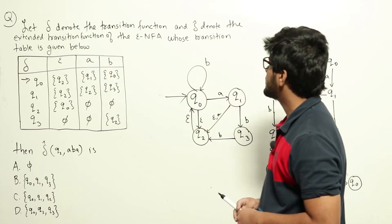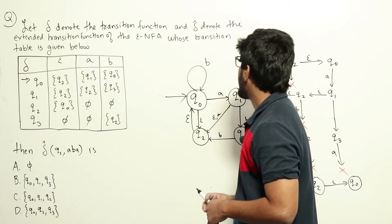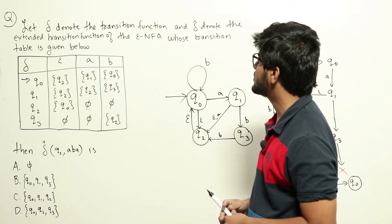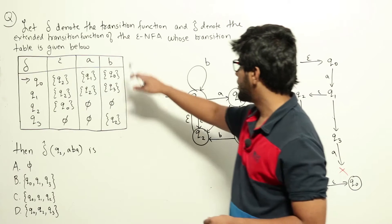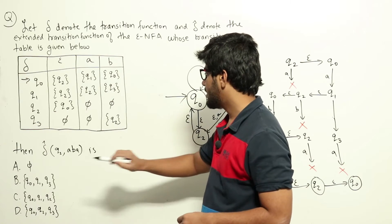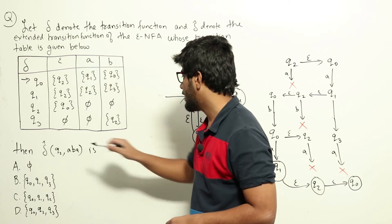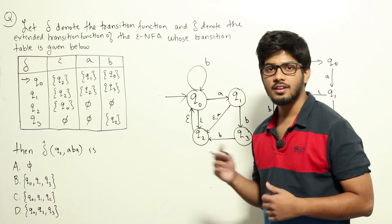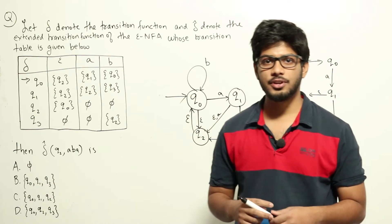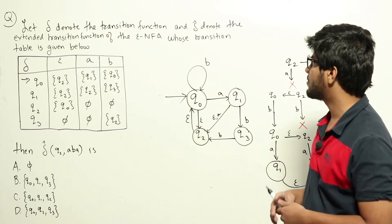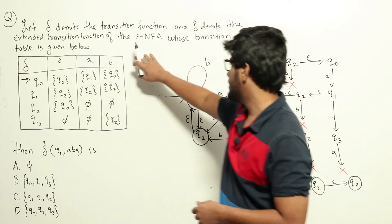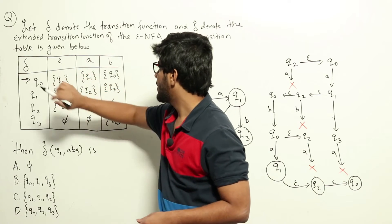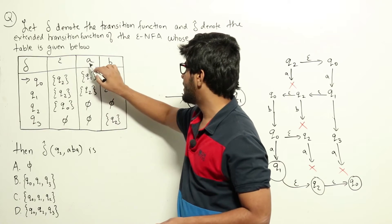Let delta denote the transition function and delta-cap denote the extended transition function of the epsilon-NFA whose transition table is given. We have been given this transition table. This is a question from theory of computation regarding NFA and epsilon-NFA. We have been given the transition table for an epsilon-NFA including the transitions for epsilon.